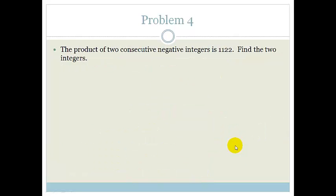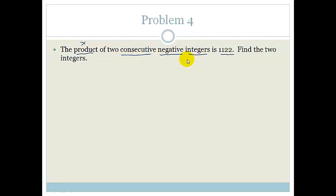Let's look at another example. The product of two consecutive negative integers is 1,122. Find the two integers. Integers are whole numbers. There are two negative integers, so I would say: let the first integer be minus X. Consecutive means one after the other, so let the second integer be minus (X plus 1).